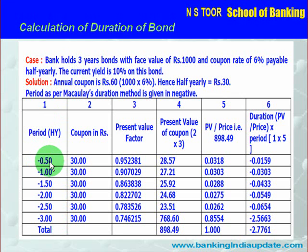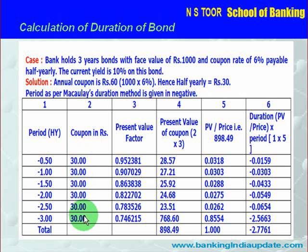So the periods in terms of 6 half years are: first half, completing 1 year, 1.5 years, completing 2 years, 2.5 years, and completing 3 years — each with a coupon amount of Rs. 30. In the last period, the holder will also get the maturity value, the face value, along with the coupon. We then discount these amounts and calculate present value using present value factors taken from value tables. For the first half year, the factor is 0.952381, and so on.